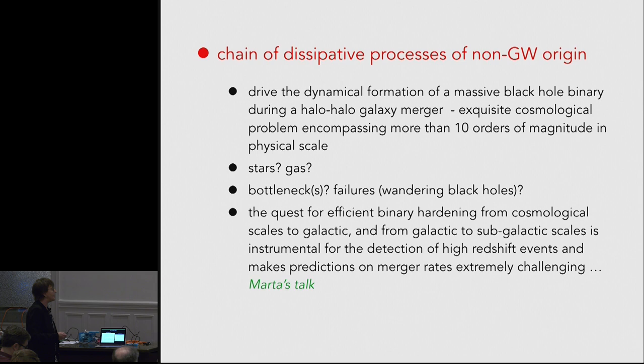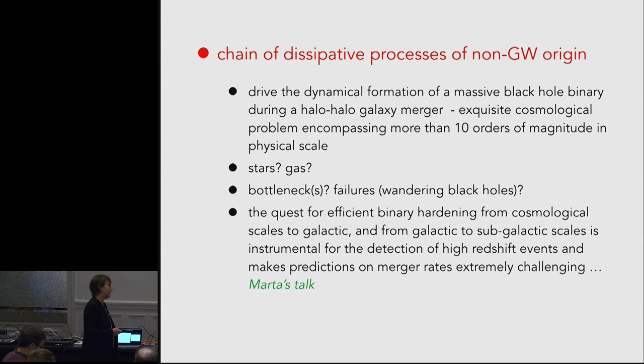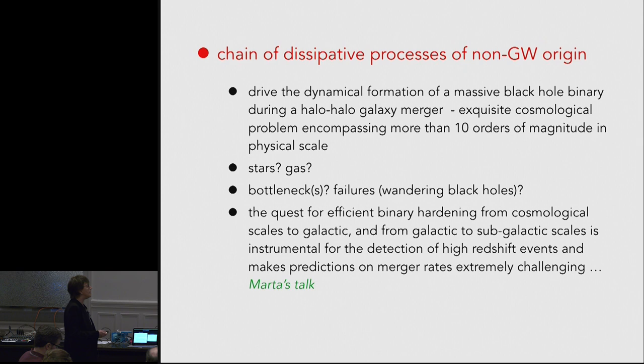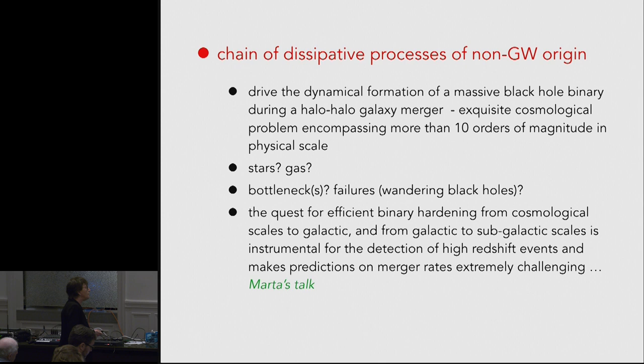This is an exquisite cosmological problem encompassing more than ten orders of magnitude in physical scale. We would like to know what is the role of stars and gas in driving these black holes down to this tiny separation. Do we have bottlenecks or failures — that is, wandering black holes? The quest for efficient binary hardening from cosmological scales to galactic and sub-galactic scales is clearly instrumental for the detection of high-redshift events, and makes predictions on merger rates extremely challenging.